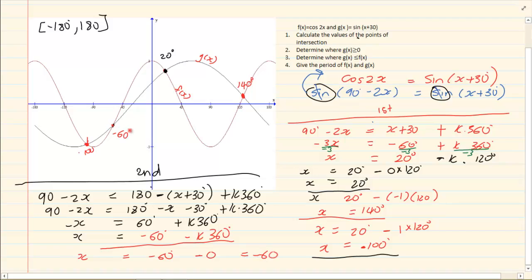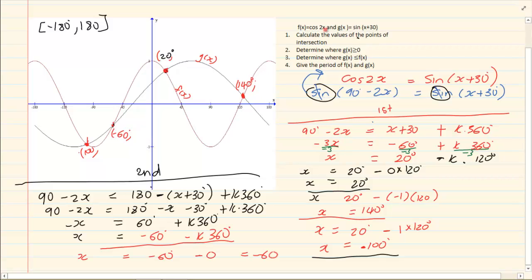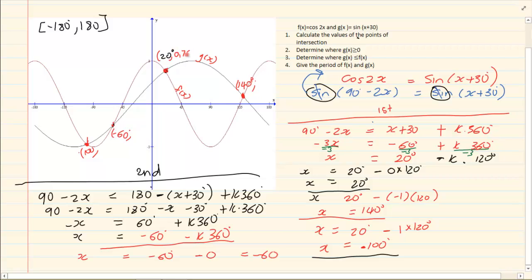I have now got my last point — I need four points and I have them, so I don't need to go further. When they say calculate the points of intersection you now have the x coordinates. To get y, simply substitute the x value into any of the equations. For example, for x = 20°: cos(2 × 20°) = cos 40° ≈ 0.766. So the point is (20°, 0.766).